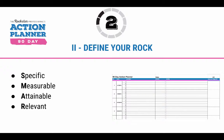Relevant — the goal should be relevant to your bold vision, to whatever it is that you're trying to achieve in the bigger picture. And last but not least, it should be timely. There should be a time limit to it. If you have a goal you want to get accomplished but you don't define a time to it, it's more of a dream. You want to make sure that you're creating your goals in SMART format and then using your 90-Day Action Planner to track its success.